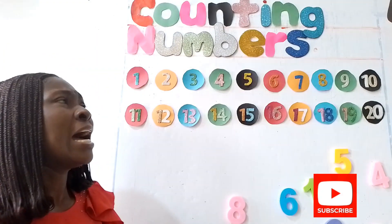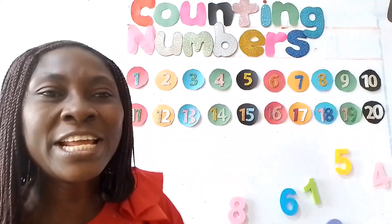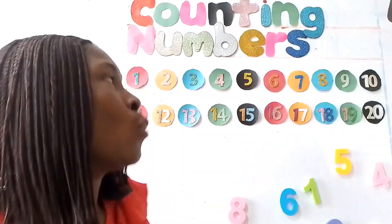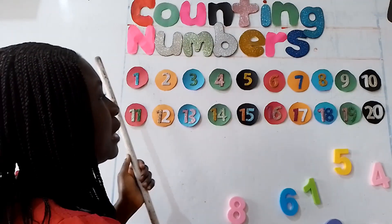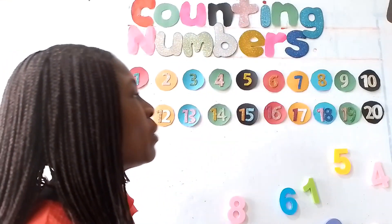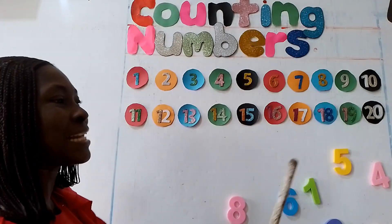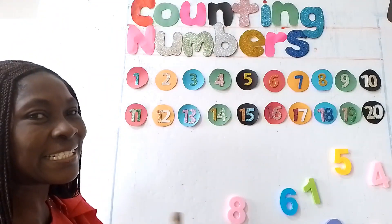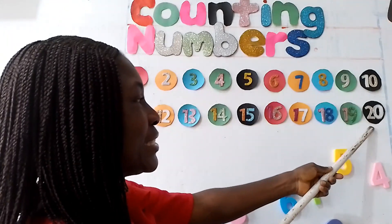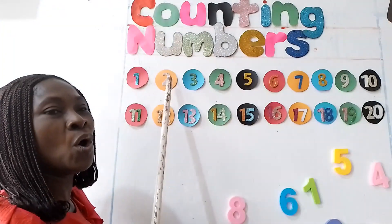Now, apart from counting the numbers, we have ascending order and descending order. When we count from 1 upward, that is ascending. When we count from 20 downward, that is descending. I'm ascending when I'm counting from 1 to 20. I'm descending when I'm counting from 20 to 1.